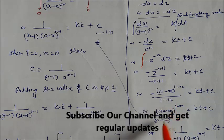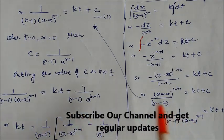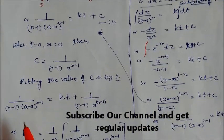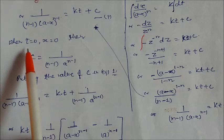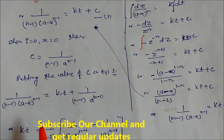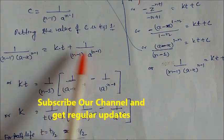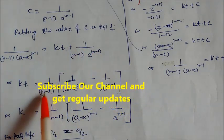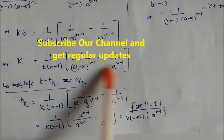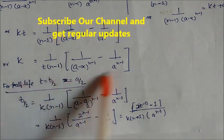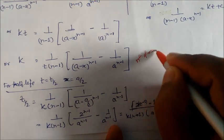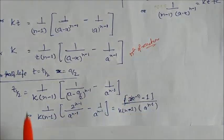On rearranging, you get the final nth order integrated rate equation. When time is equal to 0, x equals 0, so we find the constant c. Substituting this back and rearranging, taking (1 minus 1/(n minus 1)) common, you arrive at k equal to 1 divided by t(n minus 1), giving the integrated rate equation for nth order reaction.